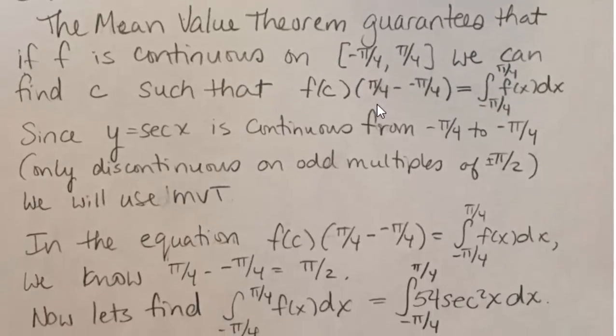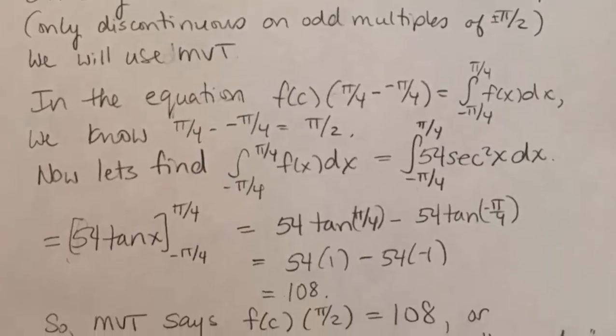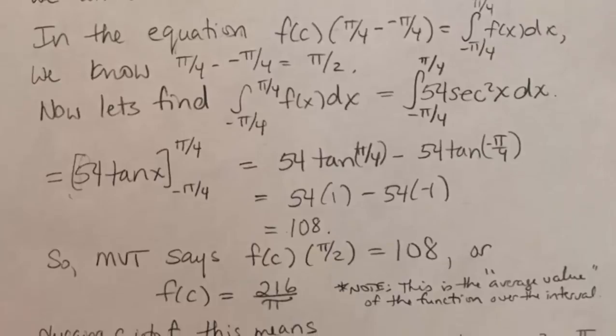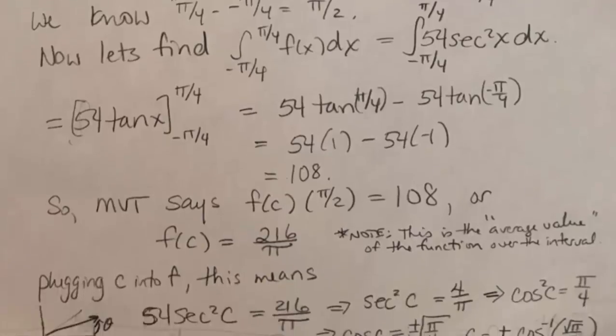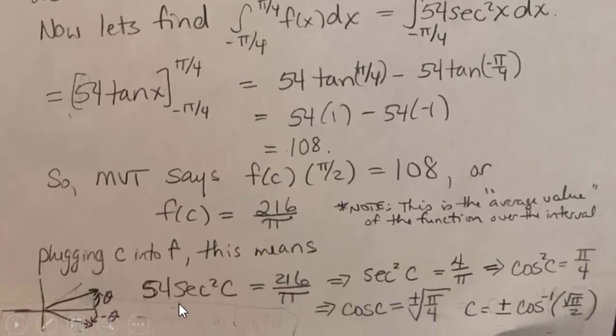And so what you have to do is to evaluate the integral, perform the subtraction, and then f of c is going to be equal to the quotient of the two. So you find that f of c in this case is equal to 216 over pi. You plug c into the function, which was 54 secant squared x, we would have 54 secant squared c. And now we need to find c.